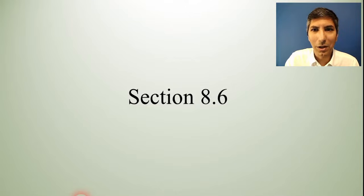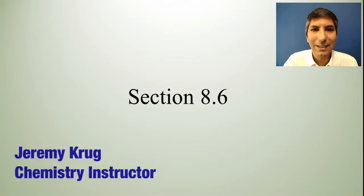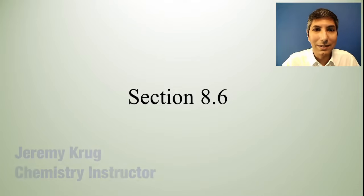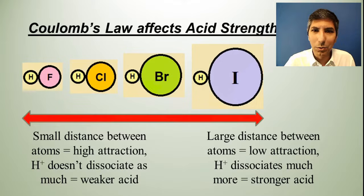Hi there, I'm Jeremy Krug, and in this video we're going to look at AP Chemistry Unit 8, Section 6, which is all about the relative strength and weaknesses of acids. There are a few different rules that we can use to help us understand how strong or how weak an acid is going to be.